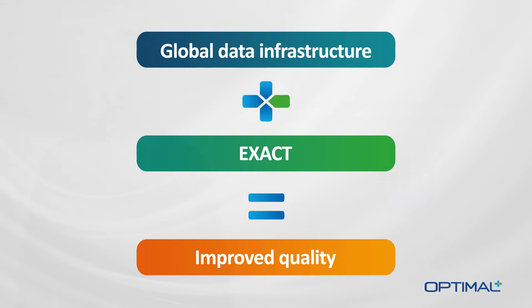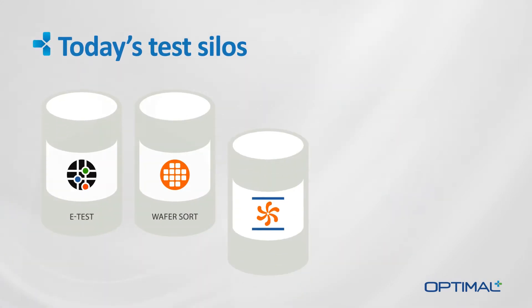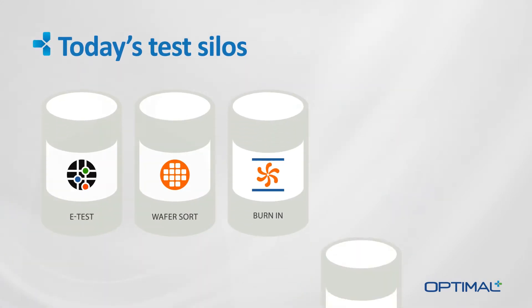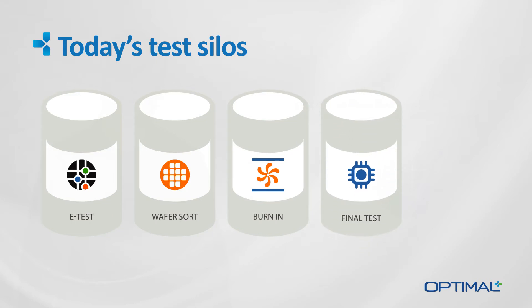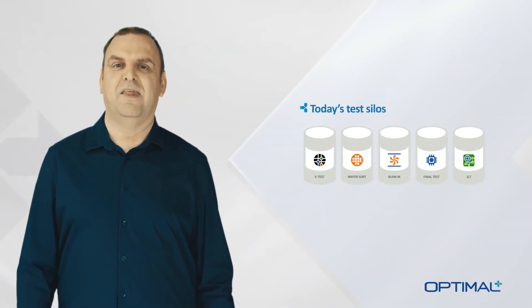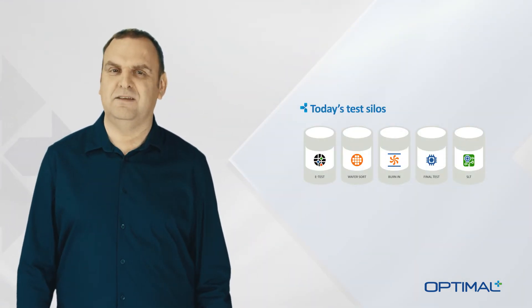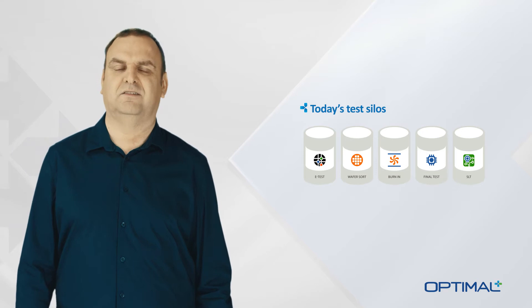Historically, semiconductor test has always been done in silos — from e-test through wafer sort, burn-in, final test, and system level test. None of these test silos have any visibility into other test silos, and therefore they can only make decisions based on the current tests being run.